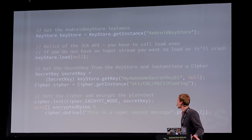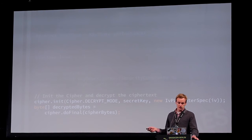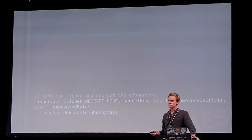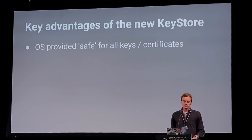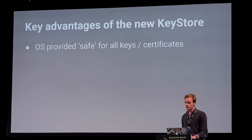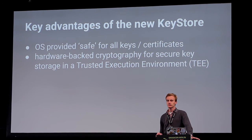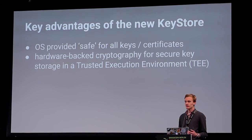For decryption, the last step changes: initialize the cipher with DECRYPT_MODE, the secret key, and the initialization vector that was generated during encryption. Then call cipher.doFinal() and you have the decrypted bytes again. The key advantages of the new KeyStore are: it's an OS-provided safe for all key material (keys and certificates), hardware-backed cryptography, secure storage in a trusted execution environment. Even if your device is compromised or rooted, the key material cannot be extracted because it never leaves the device.